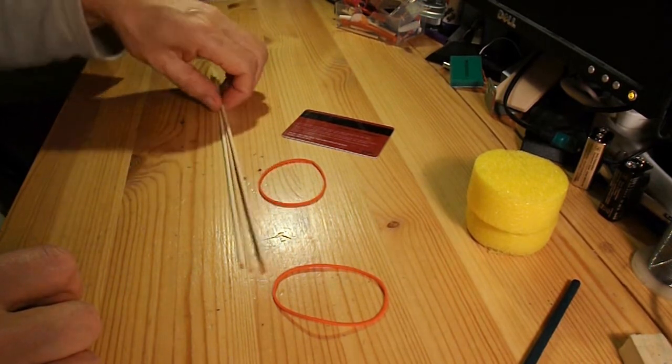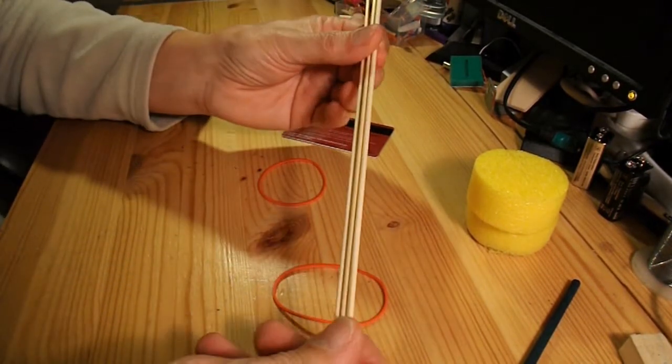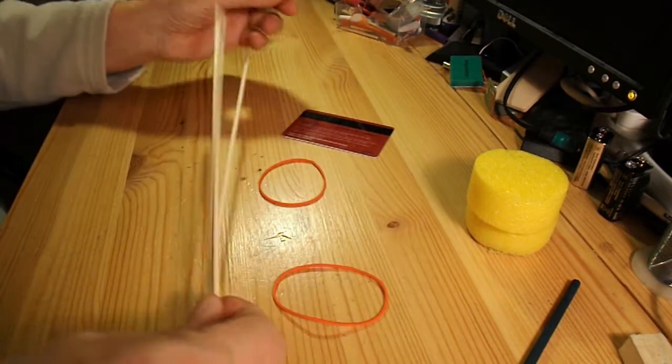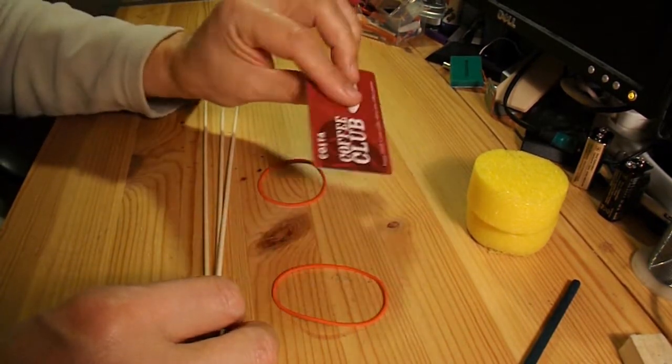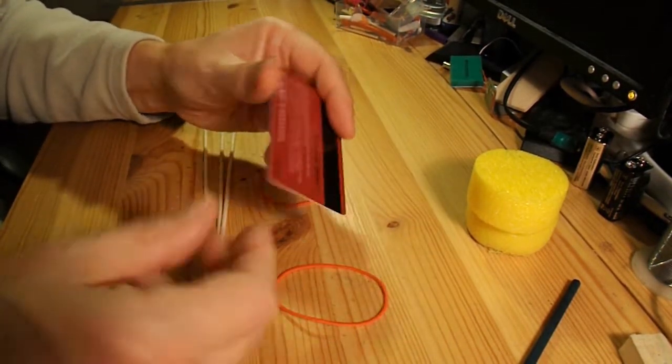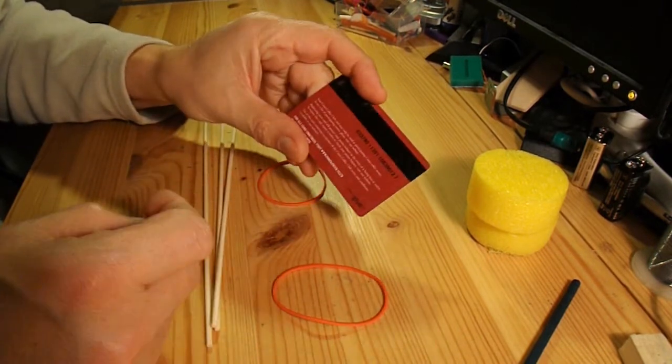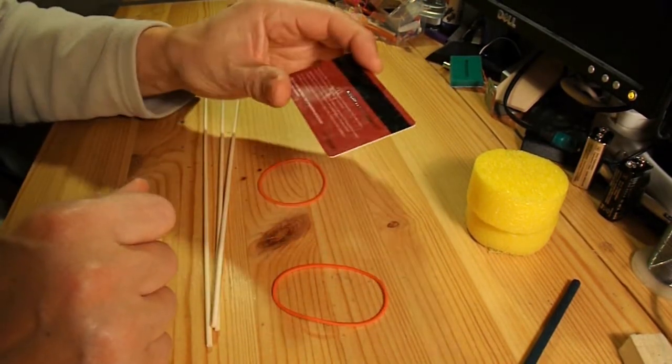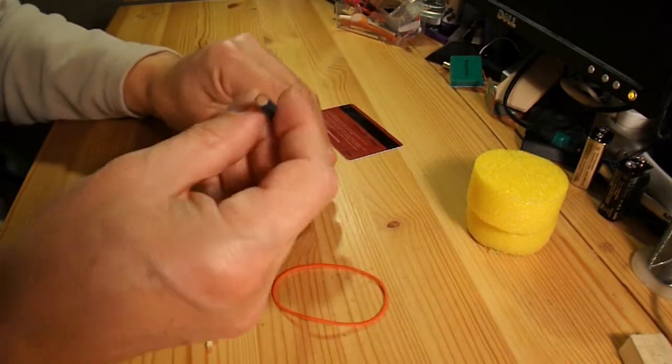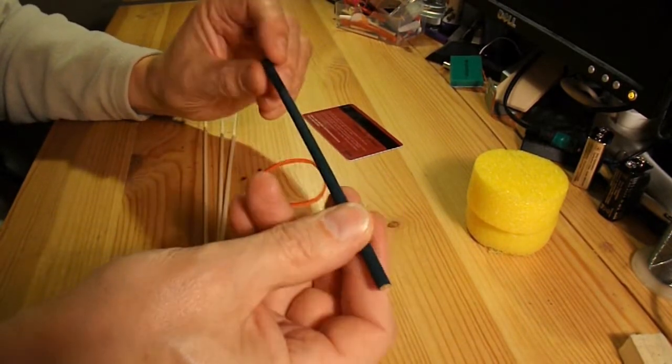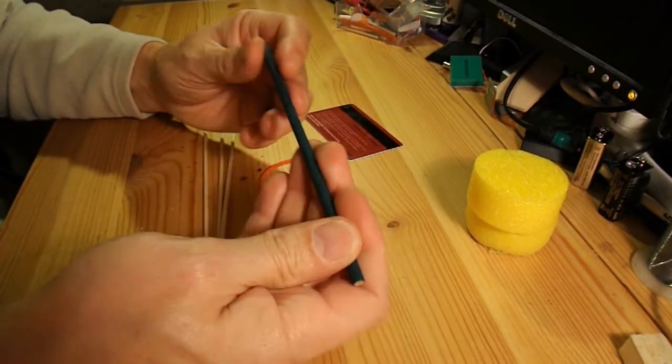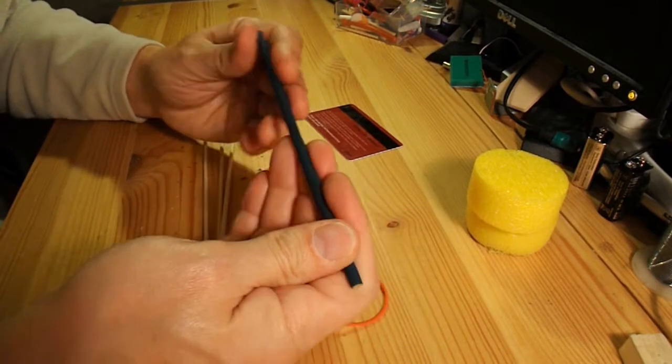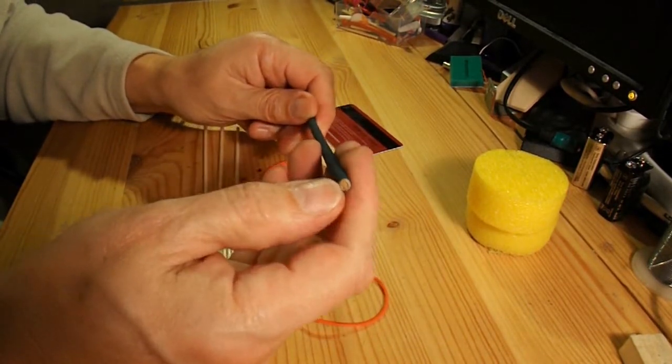I'm going to use some barbecue skewers. Possibly going to use this store card because it's a handy bit of plastic, might make a couple of wheels out of that. This is a piece of flower cane, as I call them now.